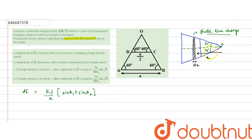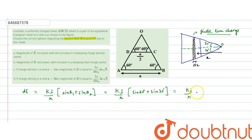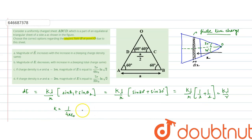In this case, θ₁ and θ₂ are both 30 degrees. Therefore, dE = k·λ/r · (sin 30° + sin 30°), which is equal to k·λ/r · (½ + ½), which is equal to k·λ/r. Here k = 1/(4πε₀), which is a constant, and λ is the linear charge density.